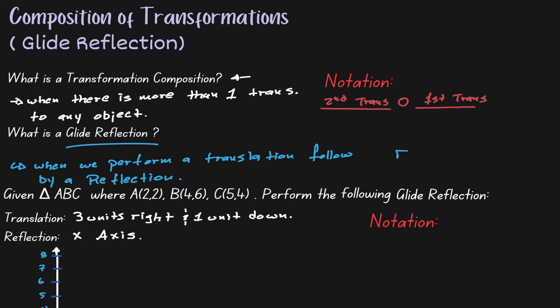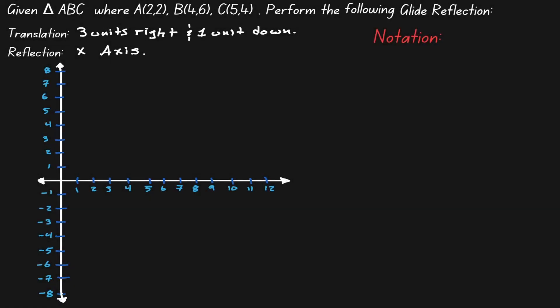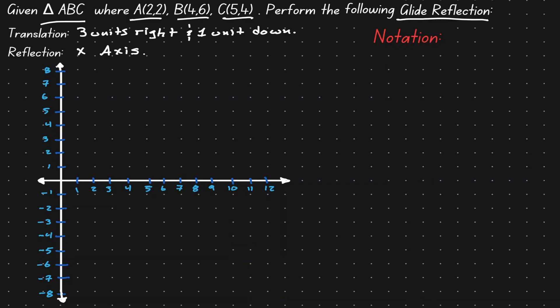So here we have triangle ABC, where the coordinate points are (2, 2), (4, 6), and (5, 4). What we want to do is perform a glide reflection on this triangle. Let's start by putting this information in our coordinate plane. For this glide reflection, we want to perform the translation of moving 3 units to the right and 1 unit down, and then perform the reflection over the x-axis.